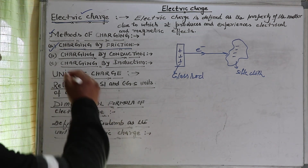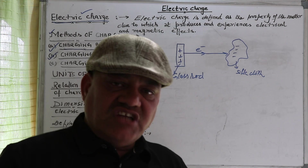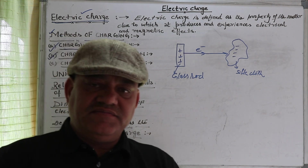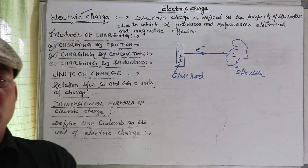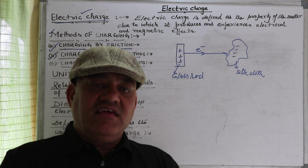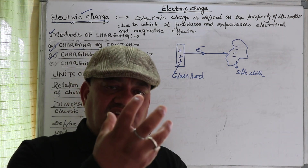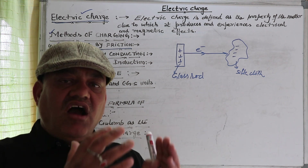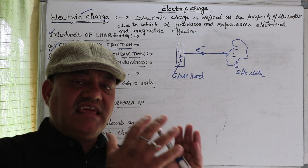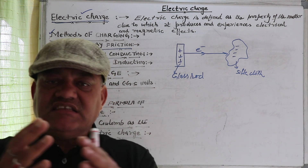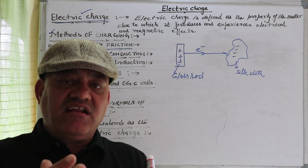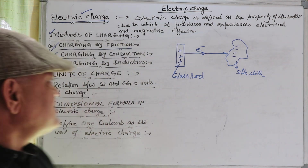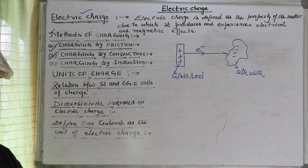The second method of charging is charging by conduction. In this case, when we place a charged body in contact with an uncharged body, there is a flow of charge or electrons from the charged body to the uncharged body until both bodies acquire equal charge or potential. This method is called charging by conduction.